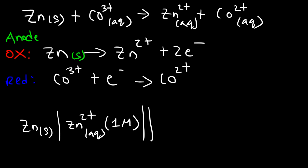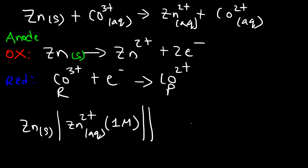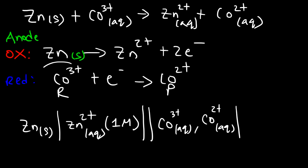Notice that cobalt does not appear as a solid — both species are in aqueous solution. So we write the reactant first: Co³⁺ aqueous, then comma, then the product: Co²⁺ aqueous. Since cobalt is not in the solid phase in this reduction reaction, we cannot use it as a cathode electrode. When you need an inert electrode, you can use platinum or graphite. In this example, platinum is used.